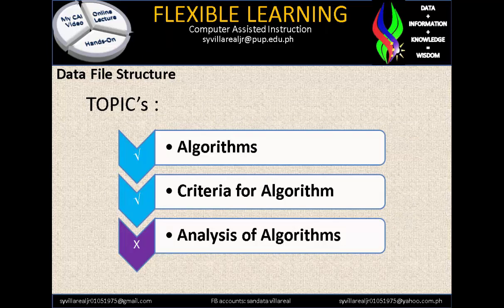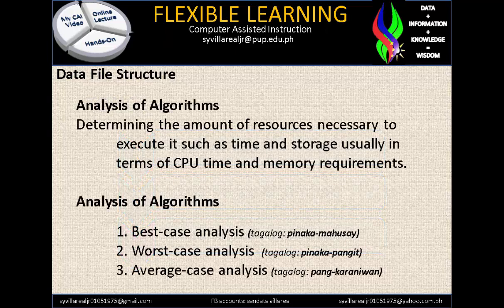Now let's proceed to our last topic: Analysis of Algorithm. Analysis of algorithms determines the amount of resources necessary to execute — such as time and storage, usually in terms of CPU time and memory requirements. There are three analyses of algorithms: best case analysis, worst case analysis, and average case analysis.